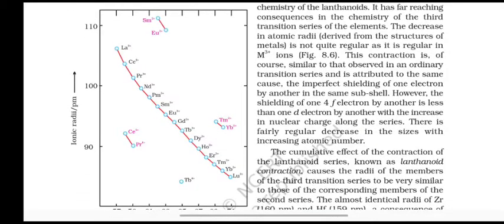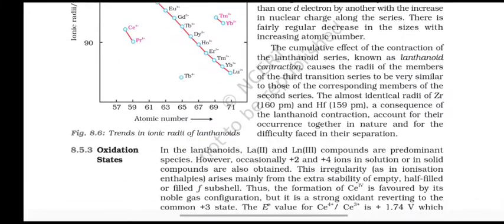However, shielding of one 4f electron by another is less than one d electron by another with the increase in nuclear charge along the series. There is fairly regular decrease in size with increased atomic number. The cumulative effect of the contraction of lanthanoid series, known as lanthanoid contraction, causes the radii of members of the third transition series to be very similar to those of corresponding members of the second series. The almost identical radii of Zr (160 pm) and Hf (159 pm), a consequence of lanthanoid contraction, account for their occurrence together in nature and the difficulty in their separation.